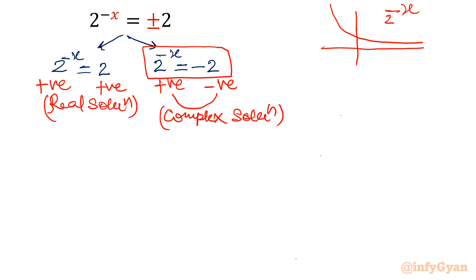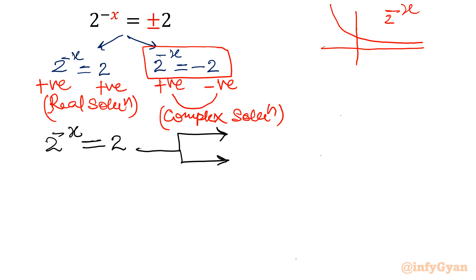I will write 2 raised to the power minus x equal to 2. We can solve this using three ways. For the real solution, using the exponent method: 2 raised to the power minus x is equal to 2, and the base is the same.